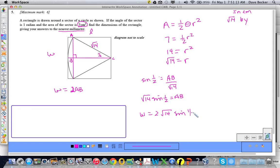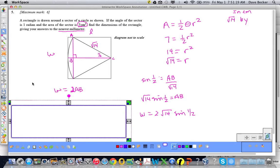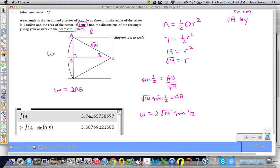And so we have our length and our width, but we have to give it to the nearest millimeter. So we've got to go to calculator time, which I've already done right here. So let me finish my thought. This would be √14 by 2√14 sin(1/2), and this is in centimeters again.